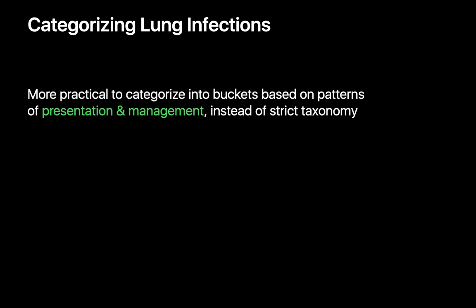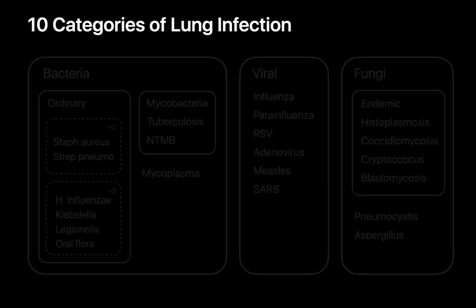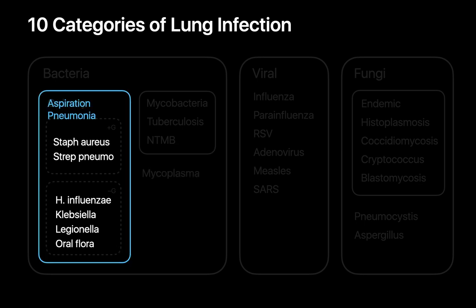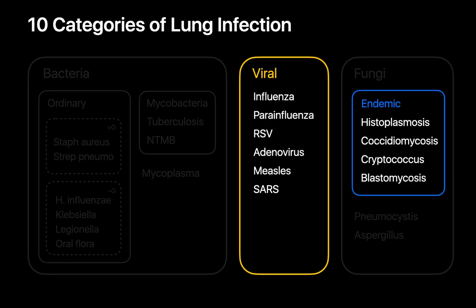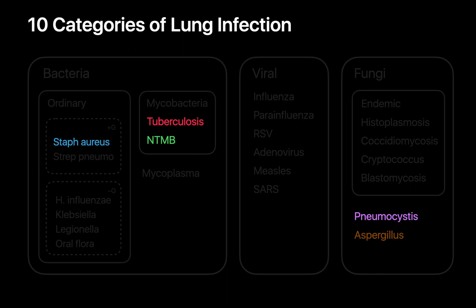Using a practical approach, we end up with 10 categories: community-acquired pneumonias, aspiration pneumonias, septic emboli, viral infections, endemic fungal infections, and five pathogen-specific buckets — consolidative staphylococcal pneumonia, tuberculosis, non-tubercular mycobacterial infection, pneumocystis, and aspergillus. Tuberculosis and septic emboli are considered never-missed diagnoses. Community-acquired pneumonia, viral pneumonia, non-tubercular mycobacterial lung infection, and aspiration pneumonia are shouldn't-miss diagnoses. The final four — consolidative staph pneumonia, endemic fungal infection, PJP, and aspergillus — are diagnoses for which clinical context is often an important factor.